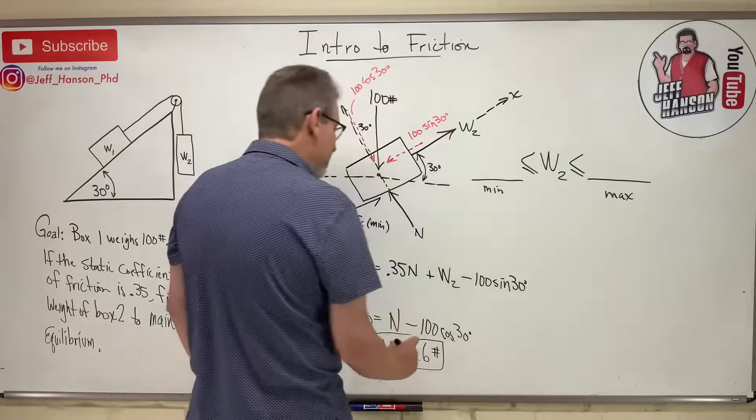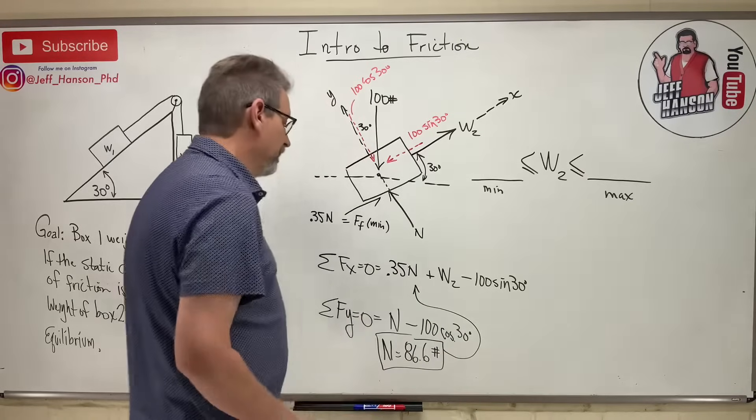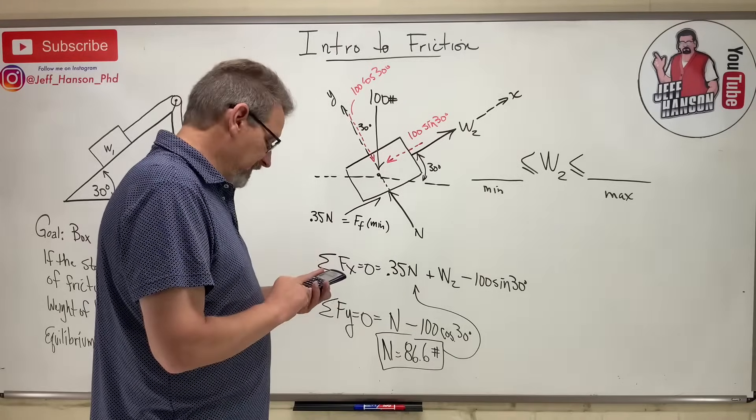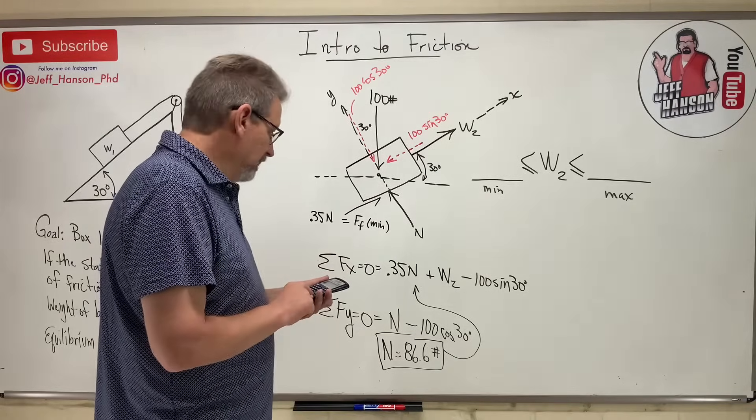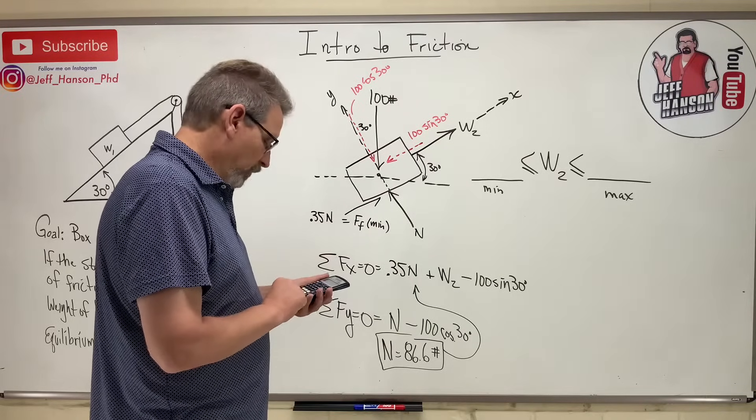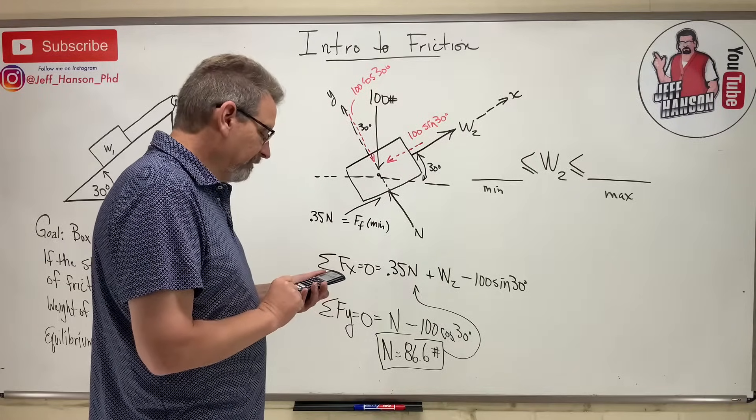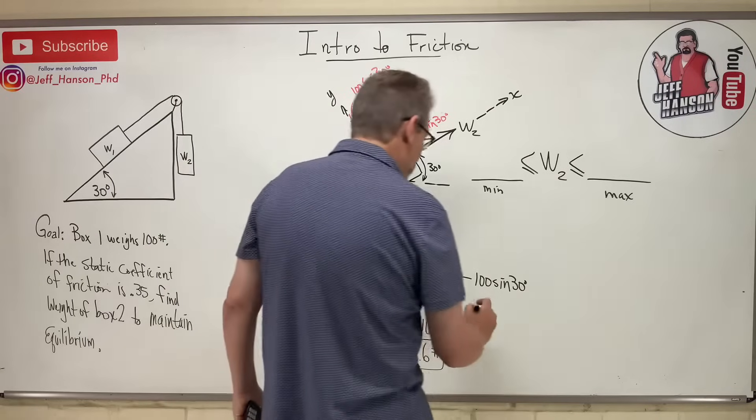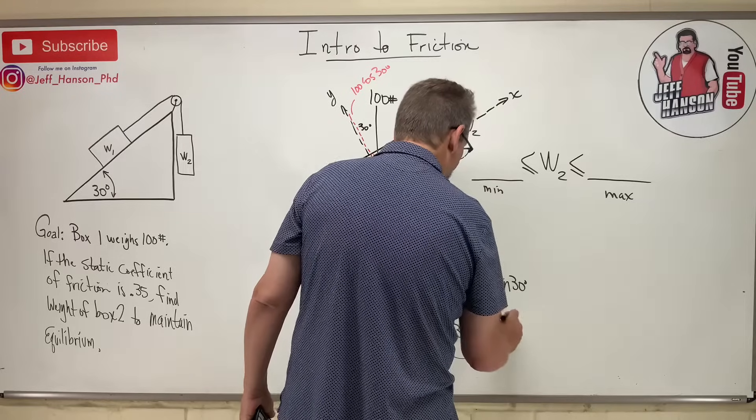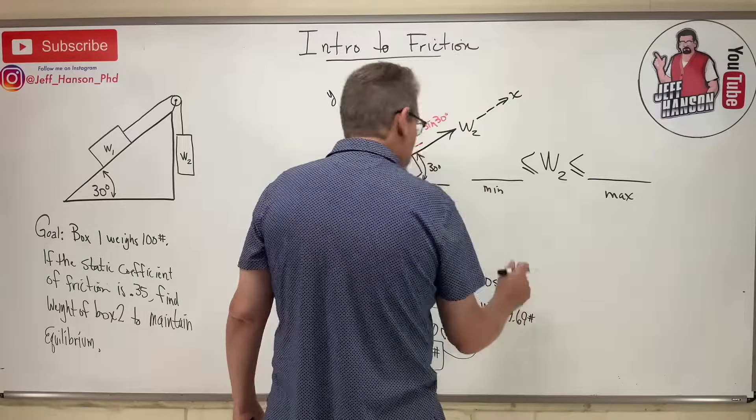Now I can take that and I can plug that in right there. And then I can come up with W2, right? So W2 is going to be 50 minus 0.35 times 86.6, 19.69. So W2, 19.69 pounds. That would go here.